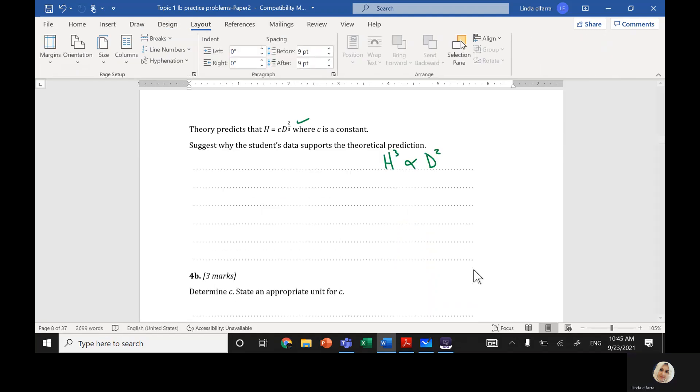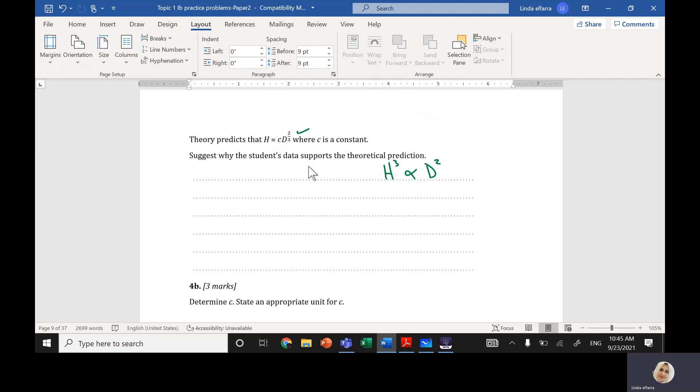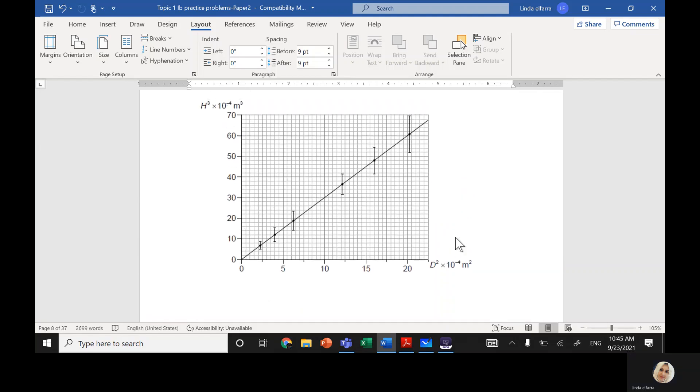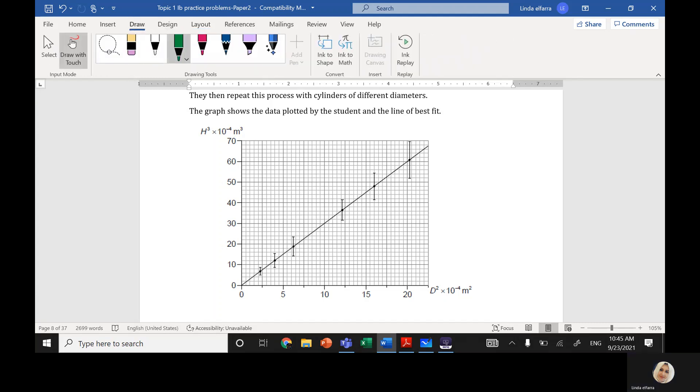Then determine the value of c, this constant c. Let's go back to the graph. First, to find the value of c, from last video we said how can we find the value of each square. We see the difference divided by the number of squares. The difference between 5 and 0 is 5, and I have 10 squares between 5 and 0, so each square represents 0.5.